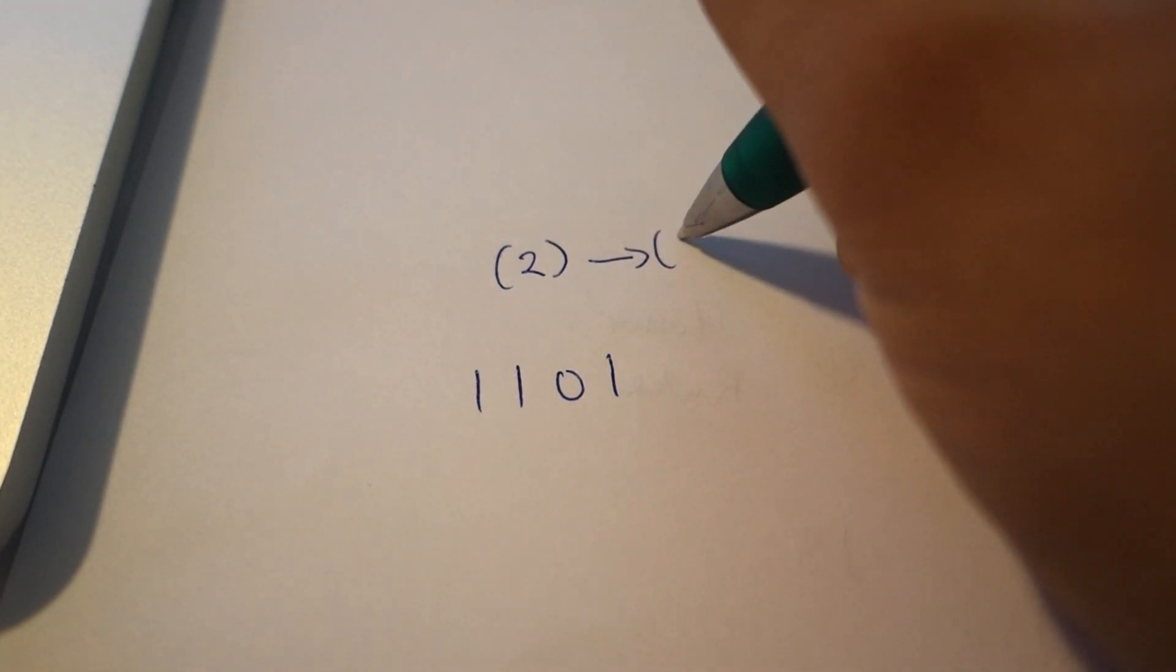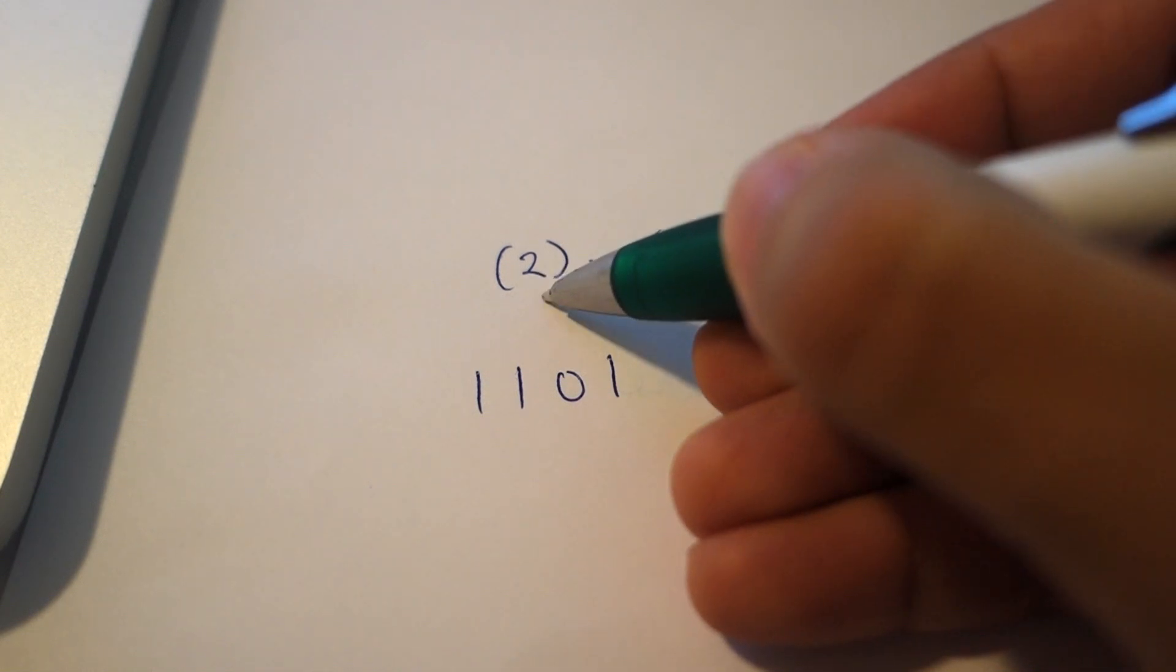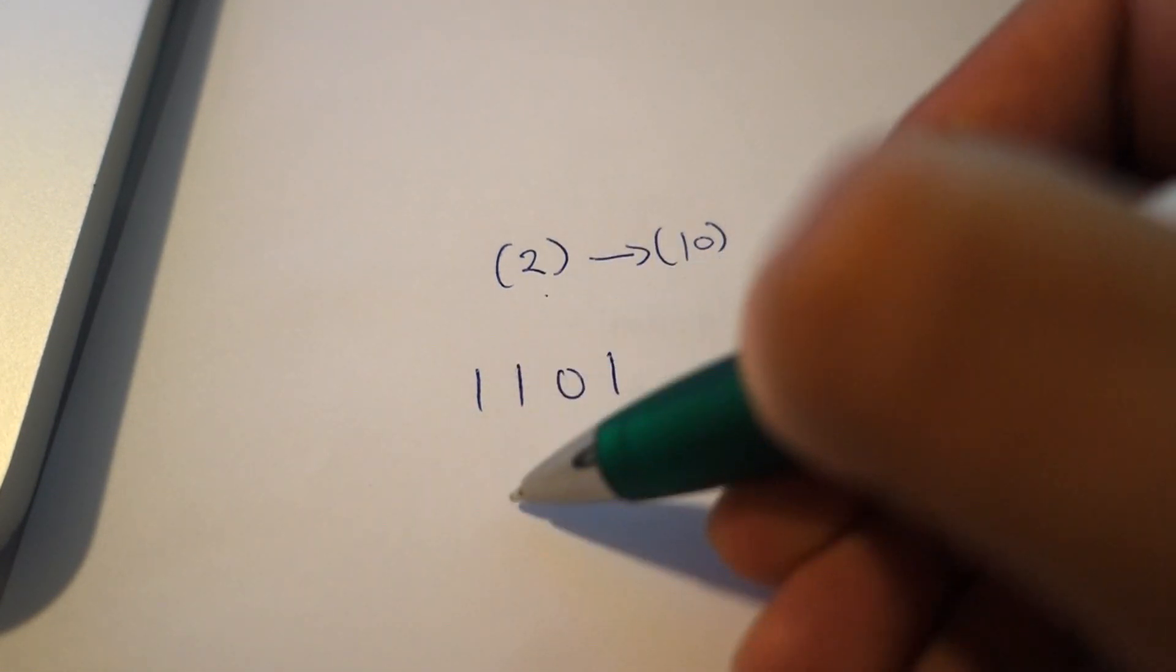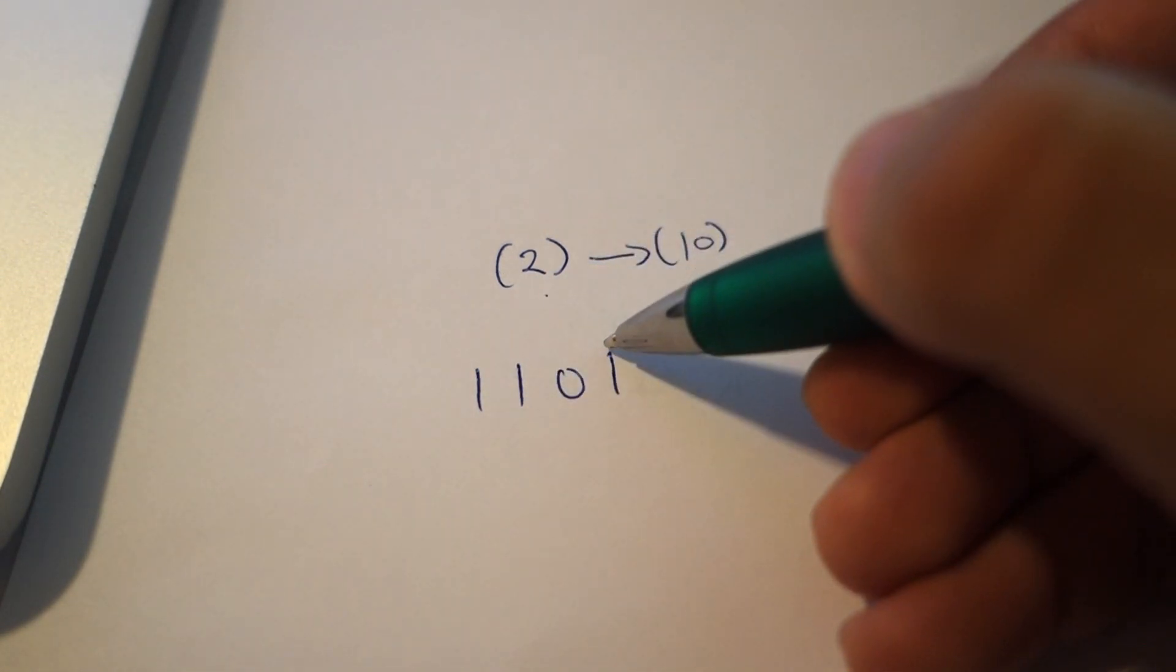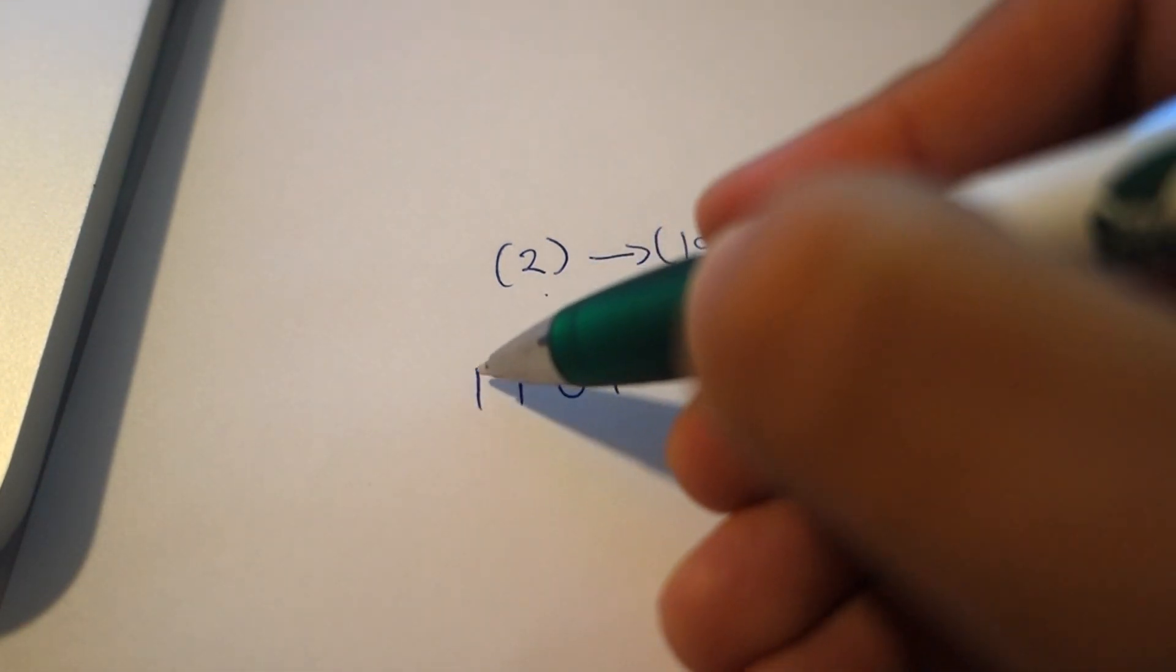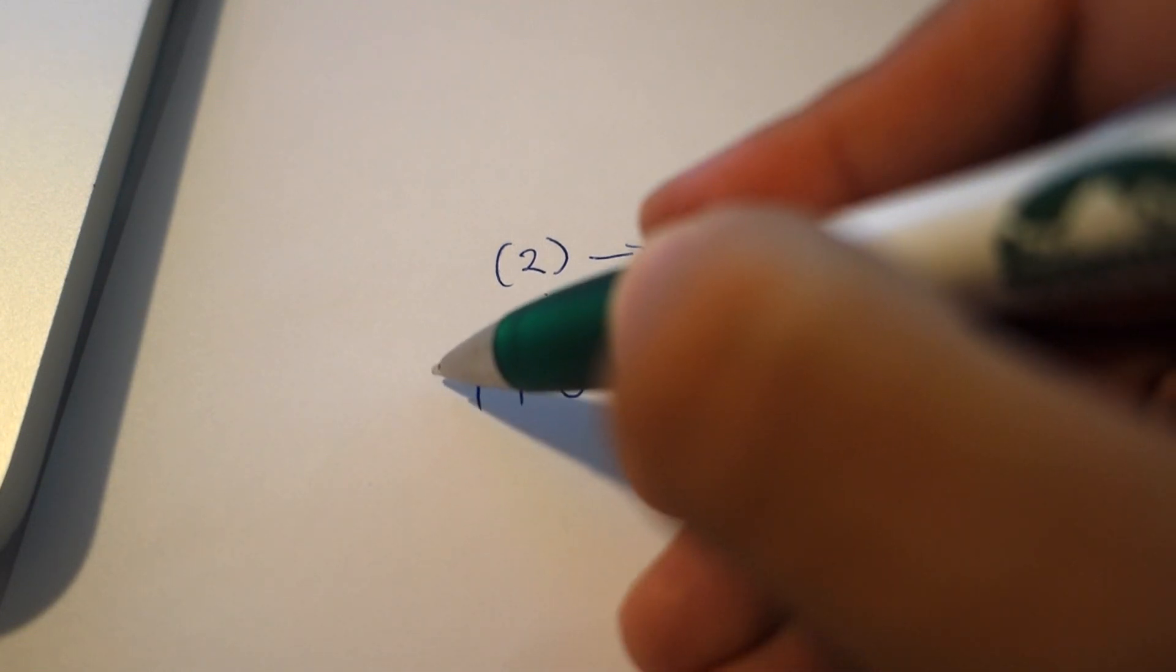We start from the most significant bit to the least significant bit. So here we have one because we have a zero here but we cannot use it, so you just take the one down and put it here.